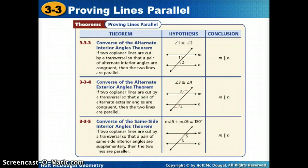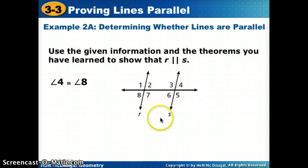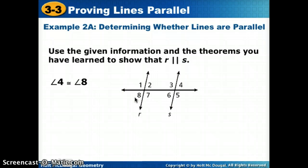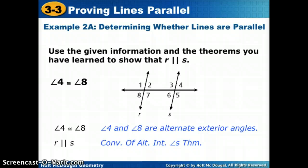Let's try one similar to that. It says: use the given information and the theorems you have learned to show that R is parallel to S. They give us that angle 4 is congruent to angle 8. We still need to know our angle pairs so we can identify what they are. Angles 4 and 8 are alternate exterior angles. Since we have alternate exterior angles congruent, we can say that the lines are parallel because of the converse of the alternate exterior angles theorem.